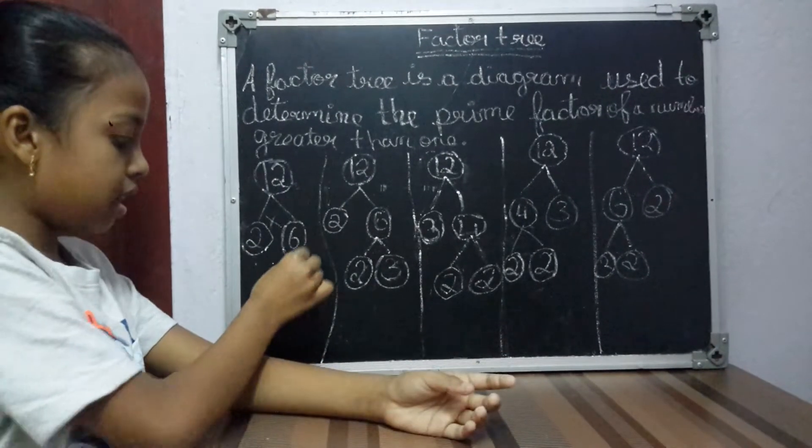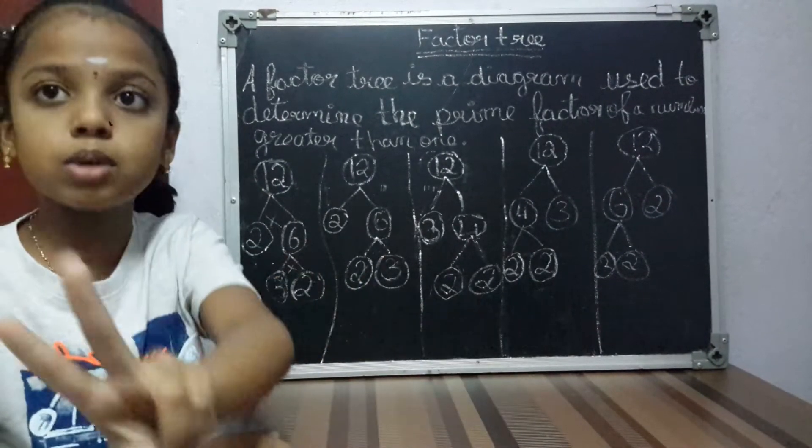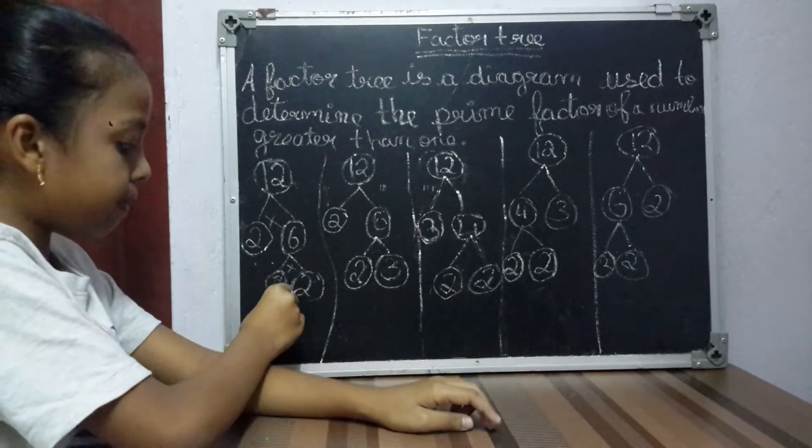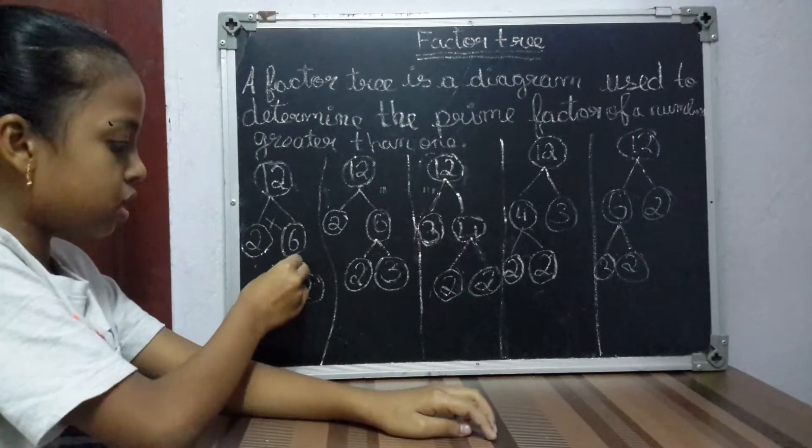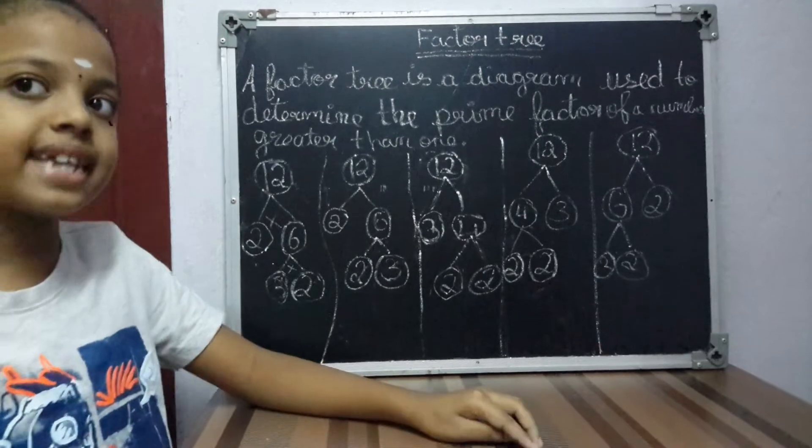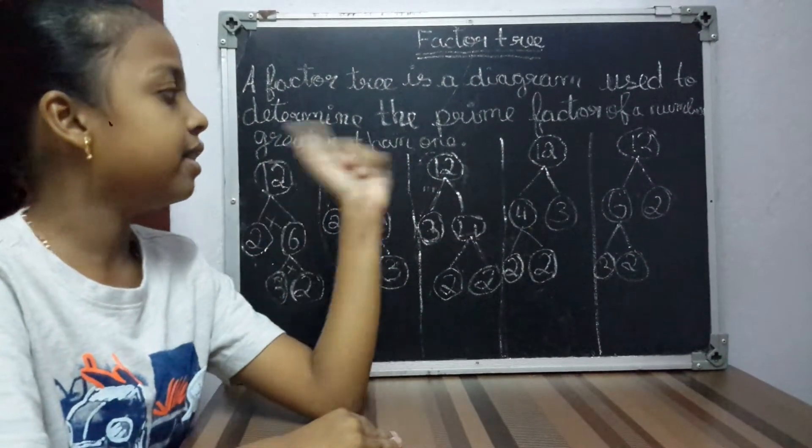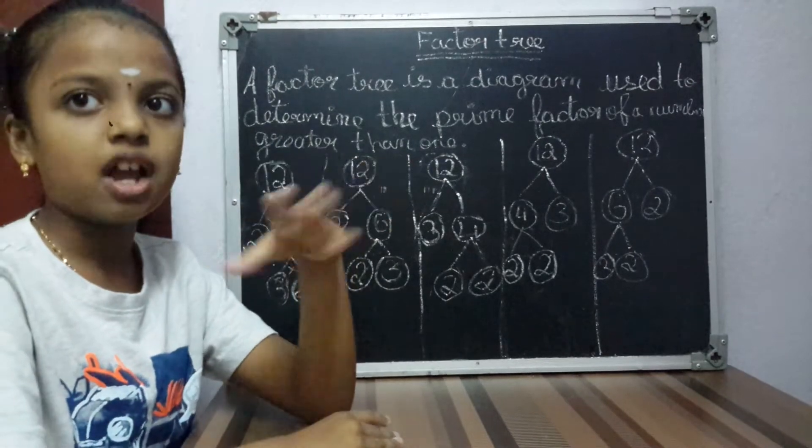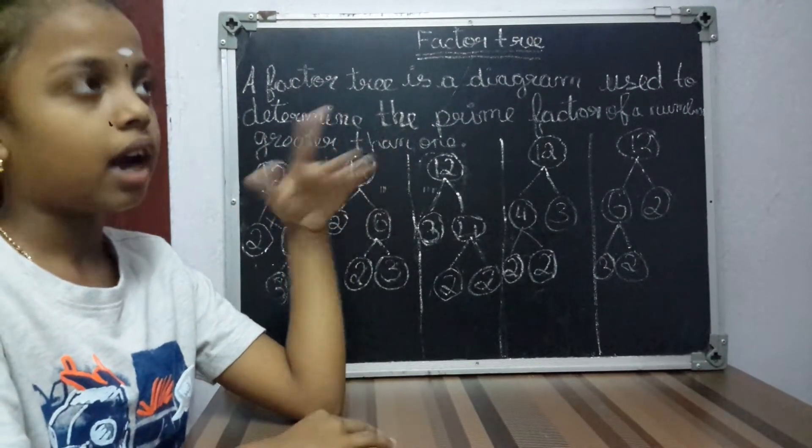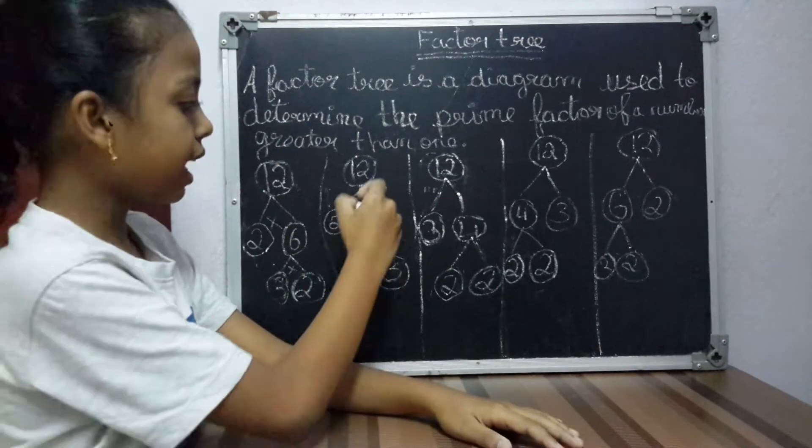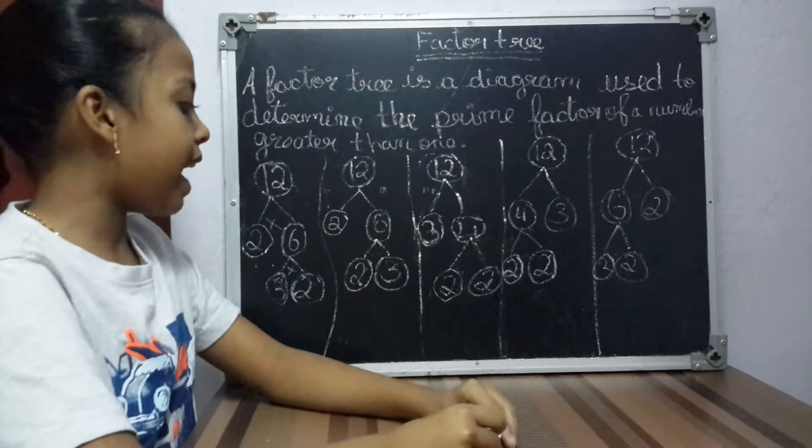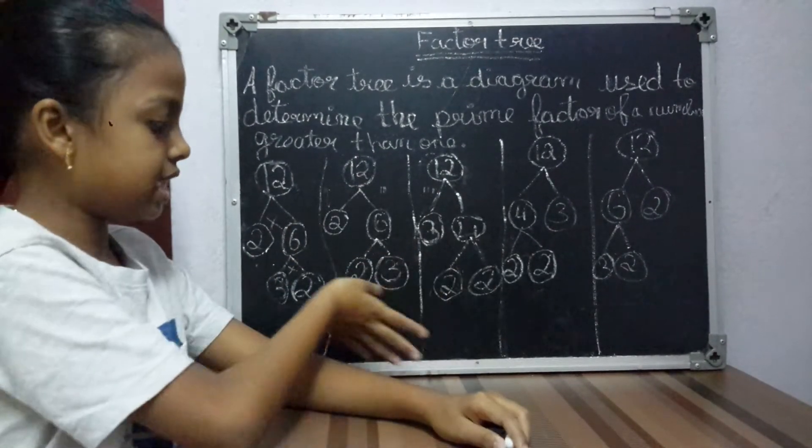We should multiply and see whether the number should come where we have split it in the bottom. For example, 6 here. We should multiply 2 numbers to get 6. So I multiplied 3 twos are 6. This is a right statement. And there are many ways to make the factor tree for 12 because there are many factors for this. I told you already in the beginning of the video.